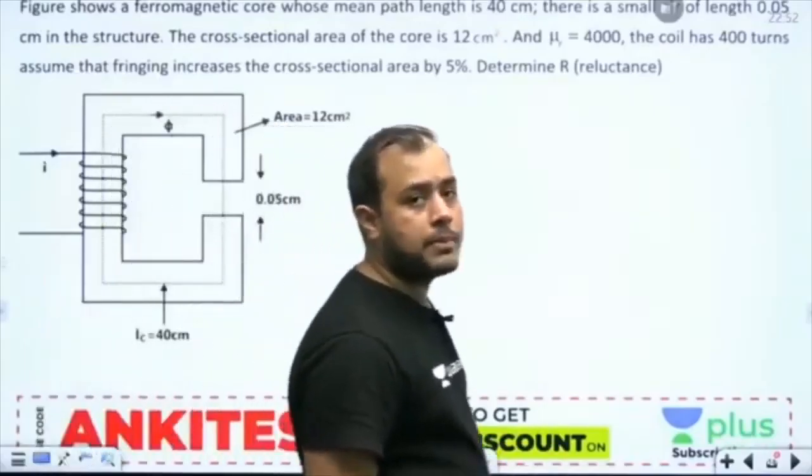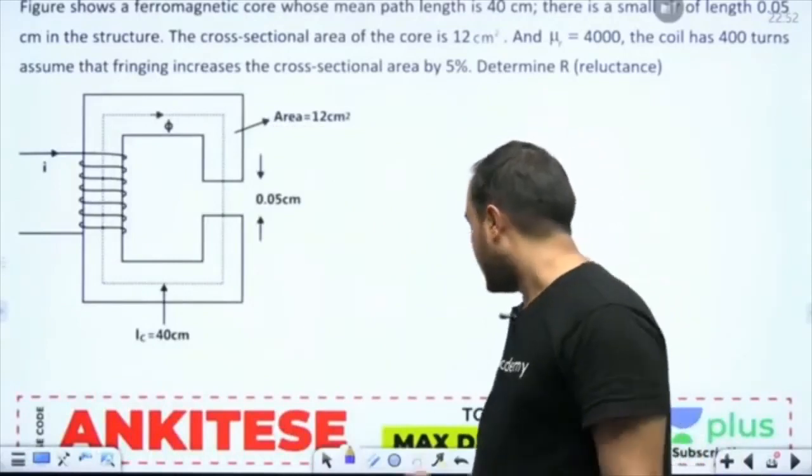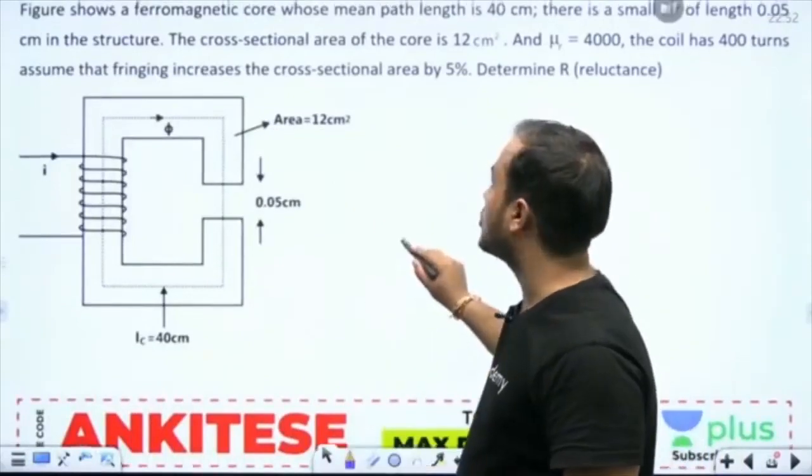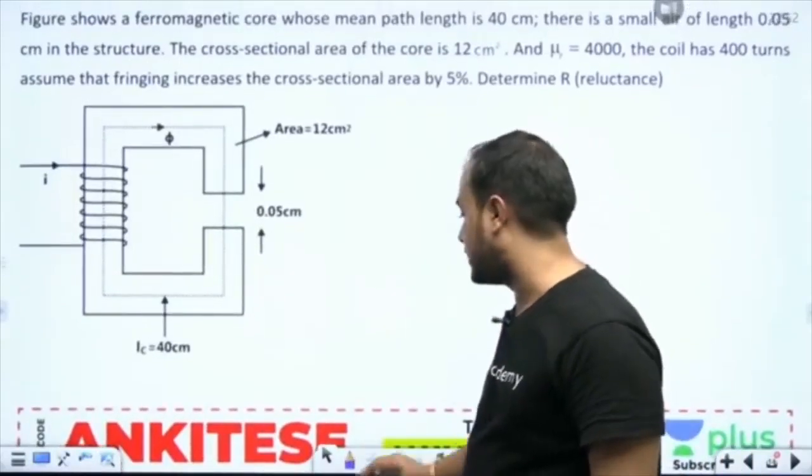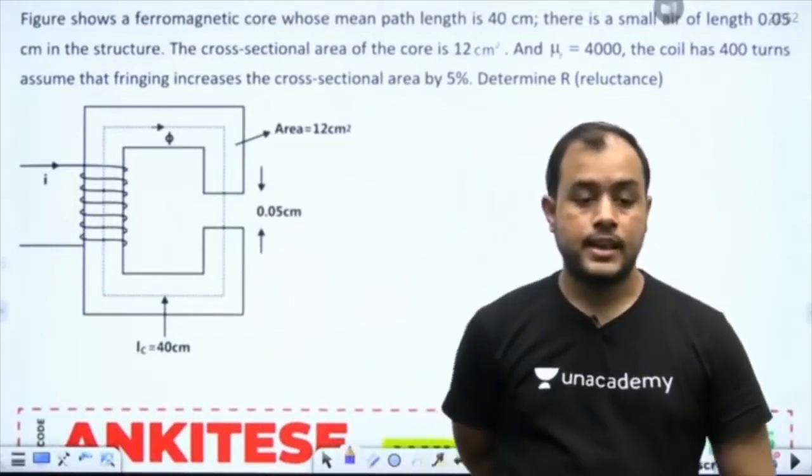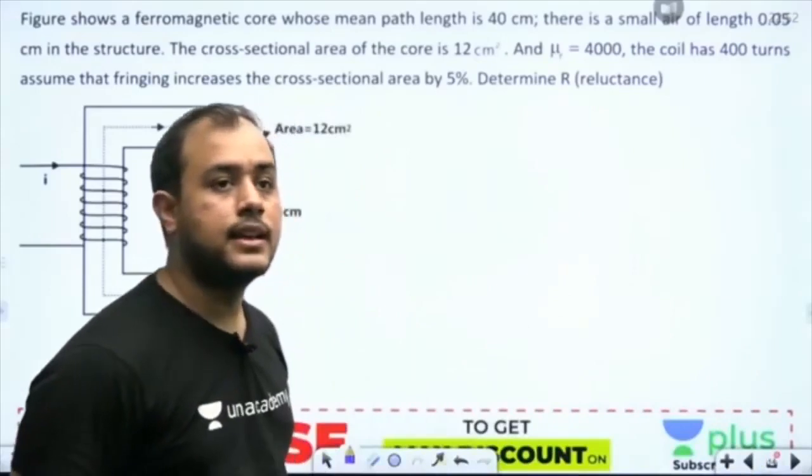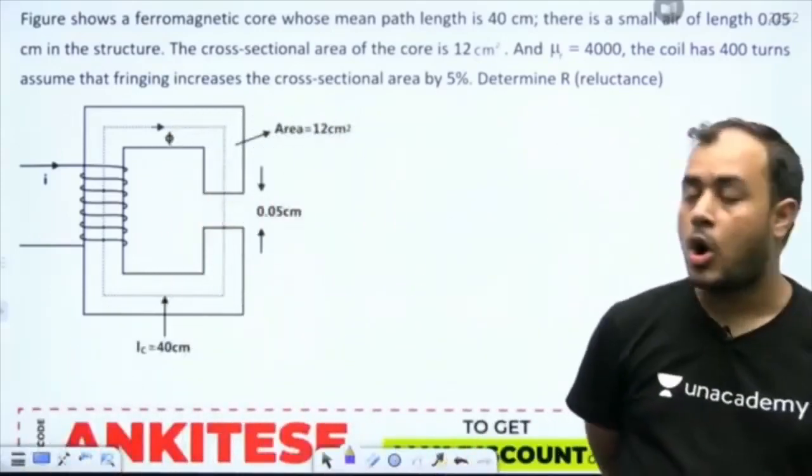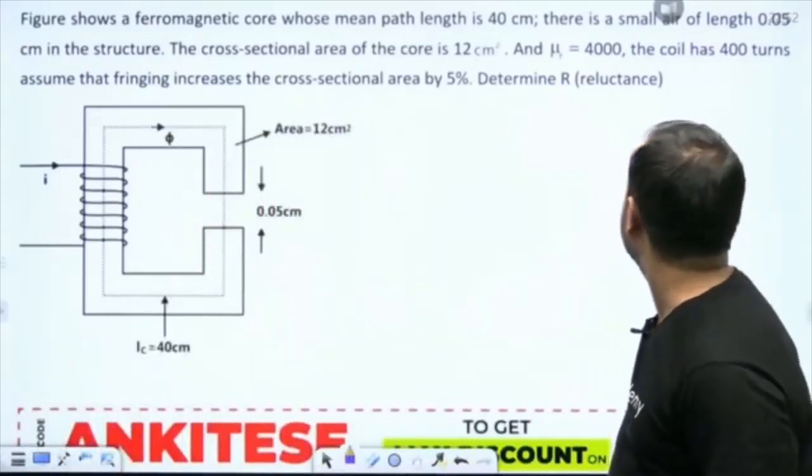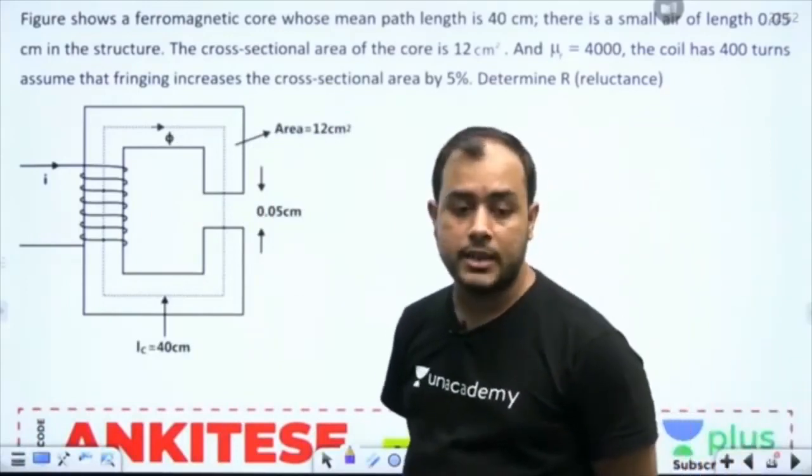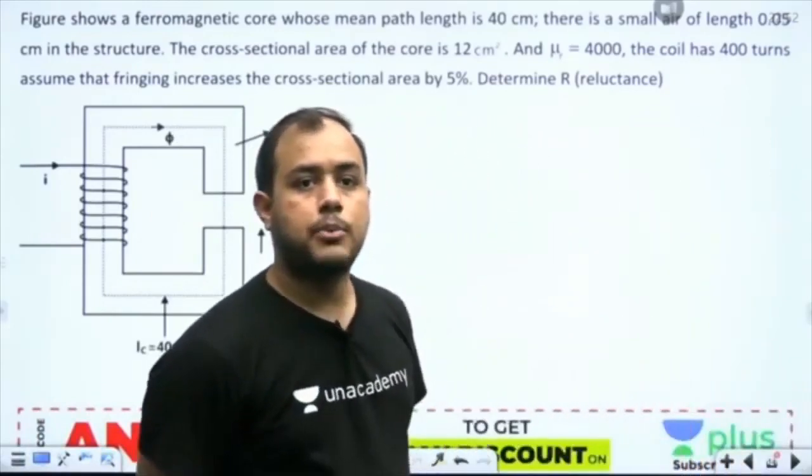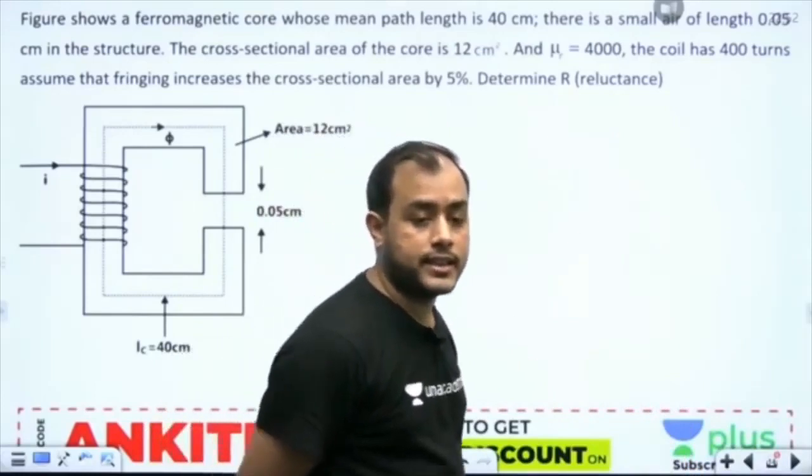Next question is based on magnetic circuit. Try this: Figure shows a ferromagnetic core whose mean path length is 40 cm. There is a small air gap of length 0.05 cm in the structure.